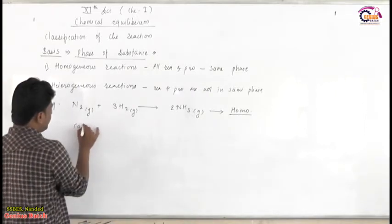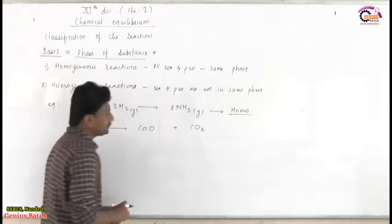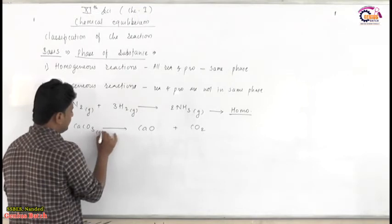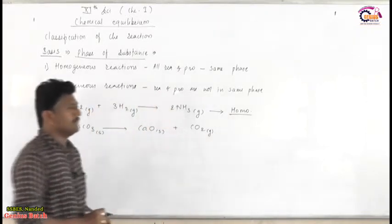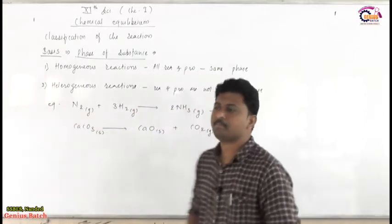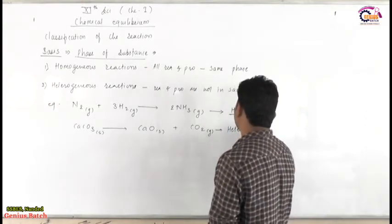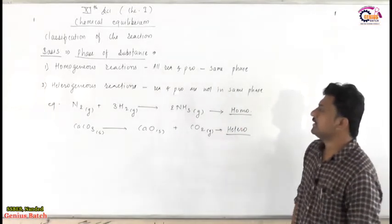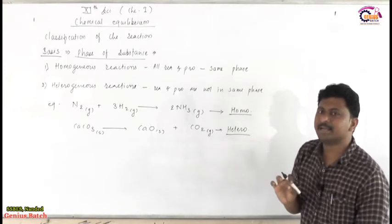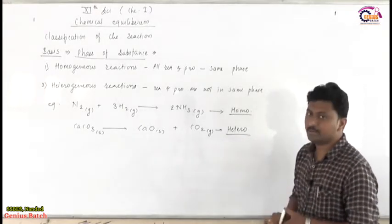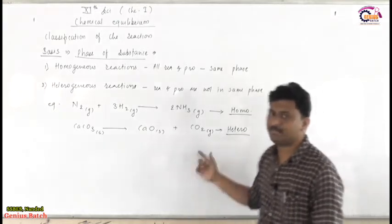Next example: calcium carbonate decomposes to calcium oxide plus CO2. Checking physical states — calcium carbonate is solid, calcium oxide is solid, CO2 is gaseous. Here, the reactant and products are present in different phases and different physical states. Therefore, this is a Heterogeneous reaction. Homogeneous stands for reactions in which all reactants and products are in the same phase, whereas heterogeneous means at least one reactant or product has a different phase than the other substances.